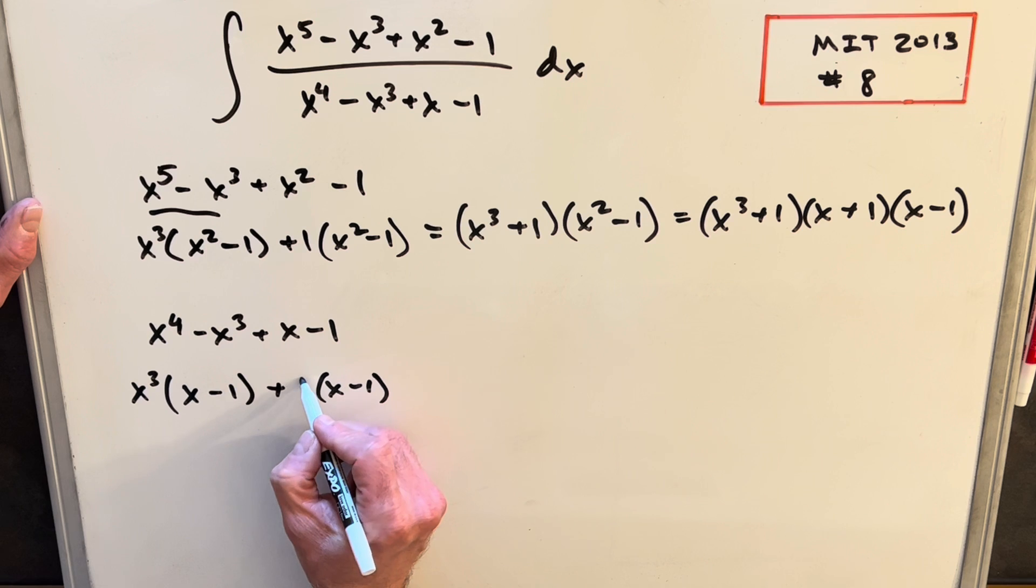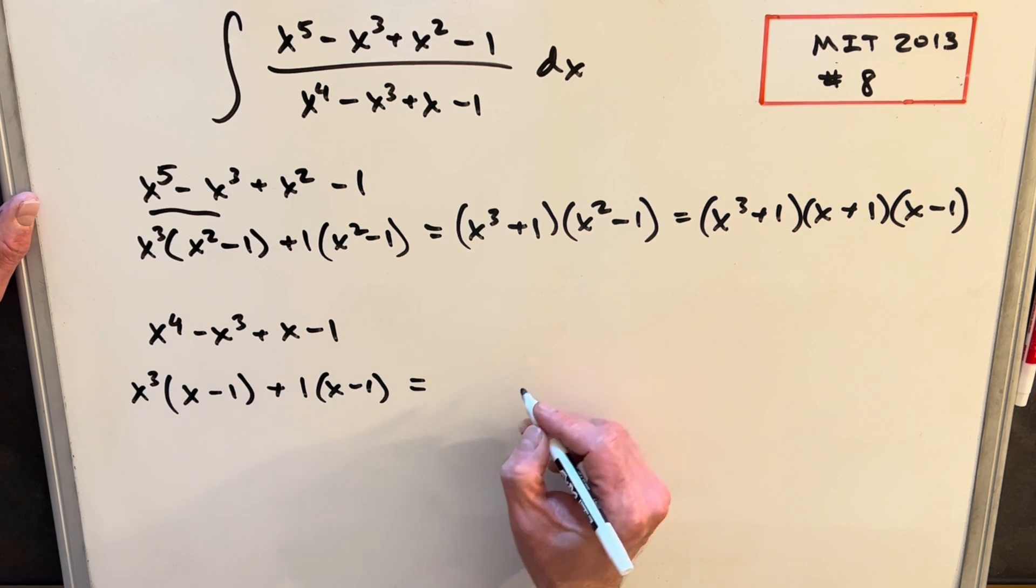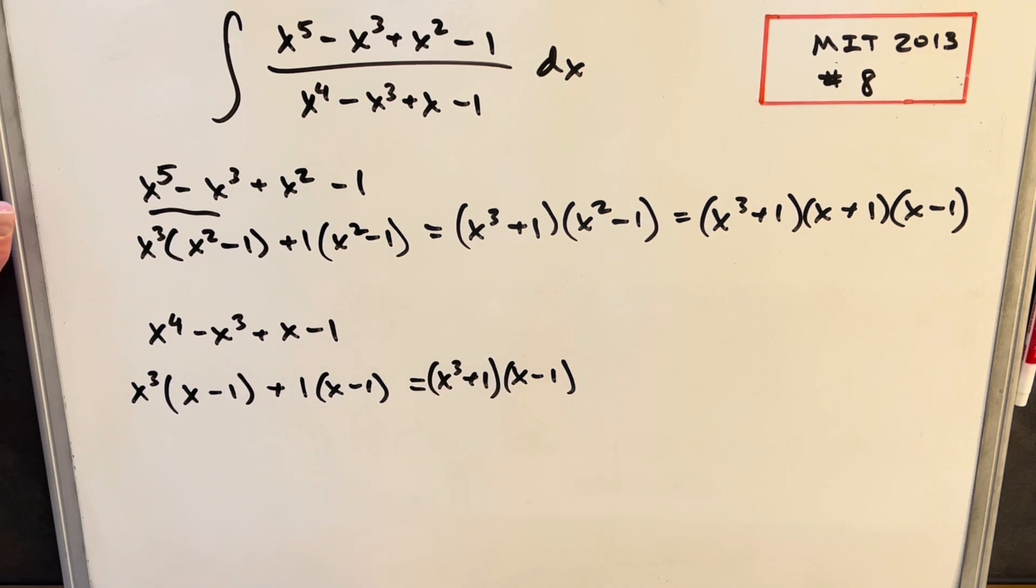We're going to have x^3 times (x - 1) plus (x - 1). We have this (x - 1) in common, just write a little 1 right there. Then we can rewrite this, factoring out the (x - 1), and write it as (x^3 + 1) times (x - 1).